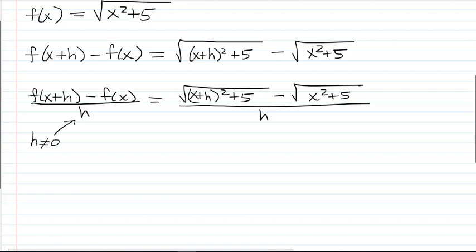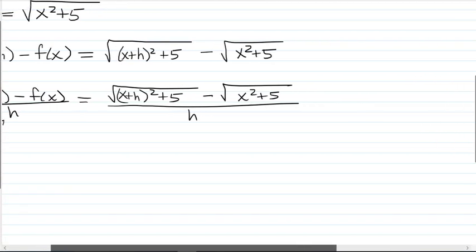So as a buildup to that, what they're going to want you to do is to continue trying to simplify this by multiplying when you have a difference of radicals, square roots in particular, in your numerator like this in the difference quotient. We often multiply by the conjugate of that difference in order to simplify.